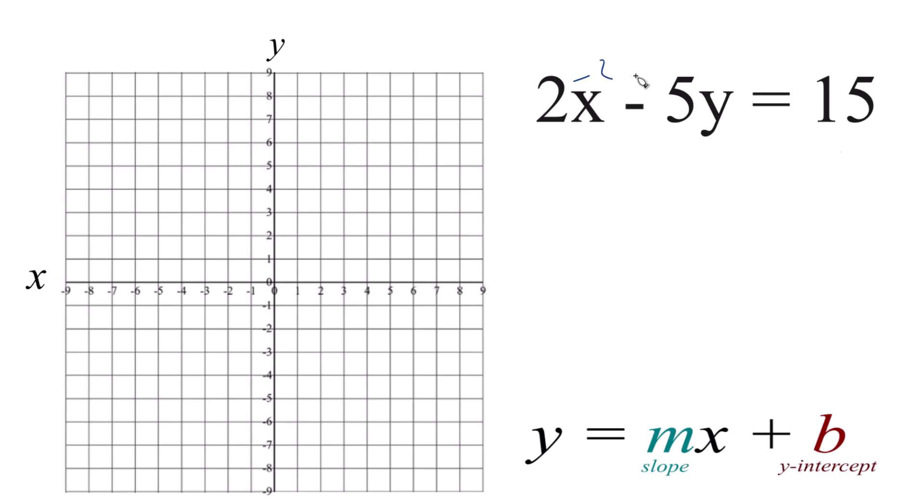I'm going to subtract 2x from both sides, then divide both sides by negative 5. When I do that, this is gone here, we'll just have y. 15 divided by negative 5, that's negative 3. Negative 2 over negative 5 gives us positive 2 fifths x here.